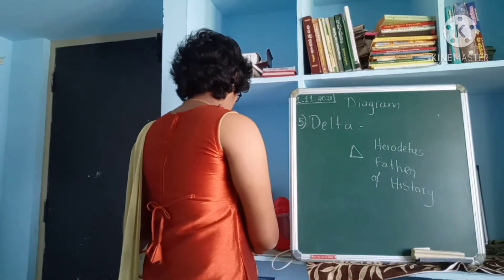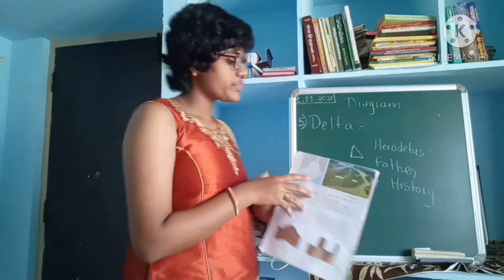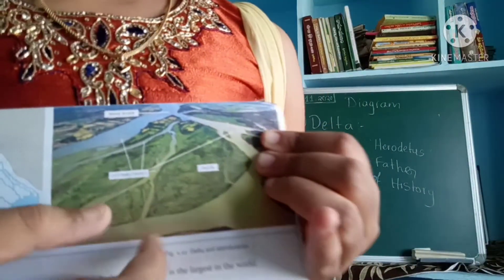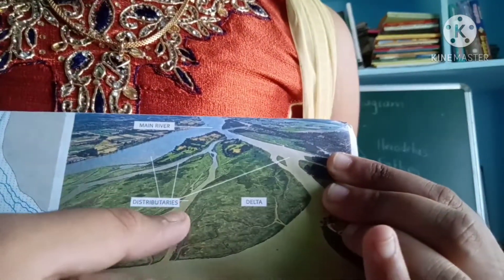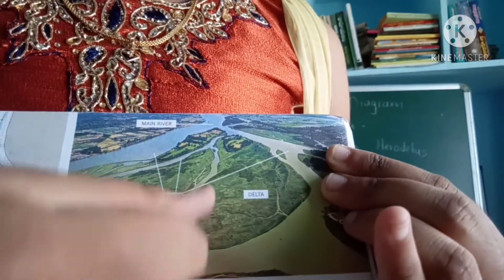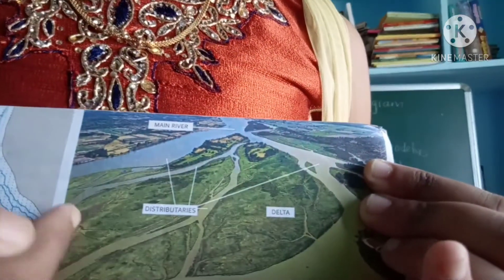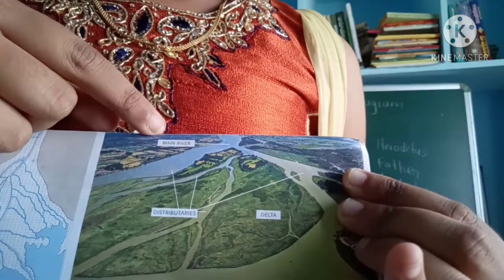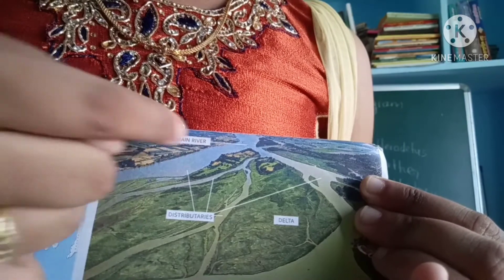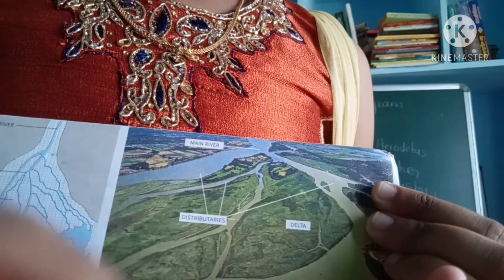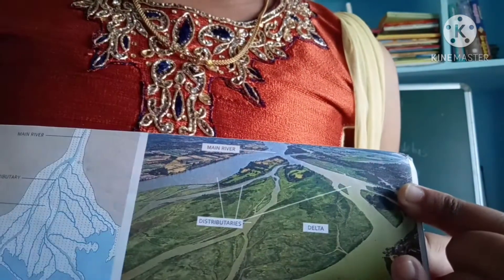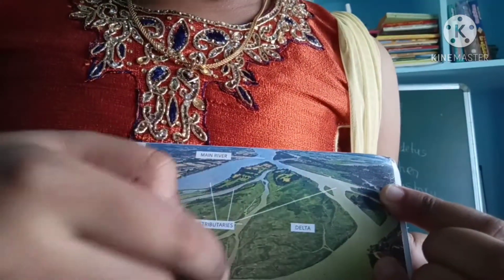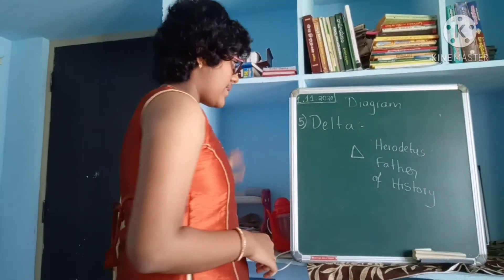Now I want to show the diagram of the delta. You can find the picture here — these are the triangular lands. This is the main river, and you can see the distributaries from the river. These rivers are being distributed, and if water joins into the river, then it is known as a tributary. This place is known as the delta.